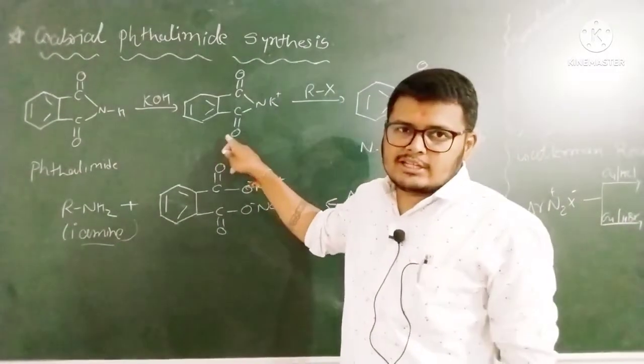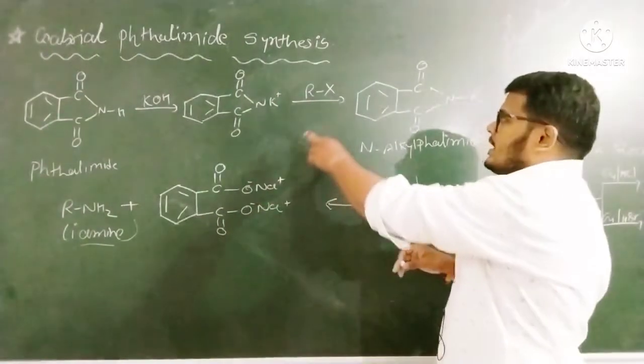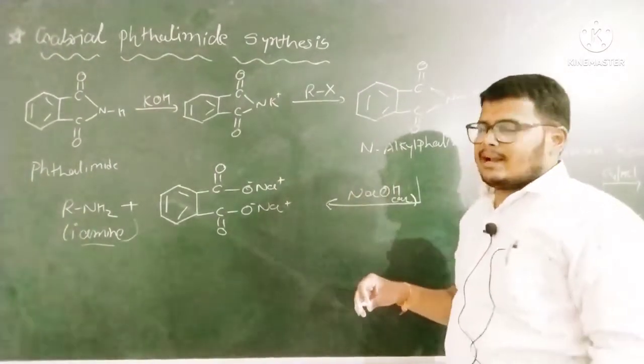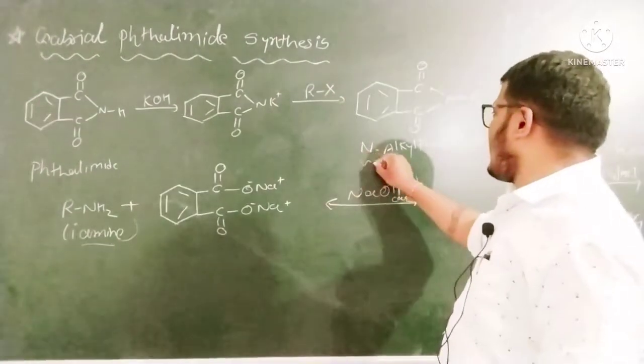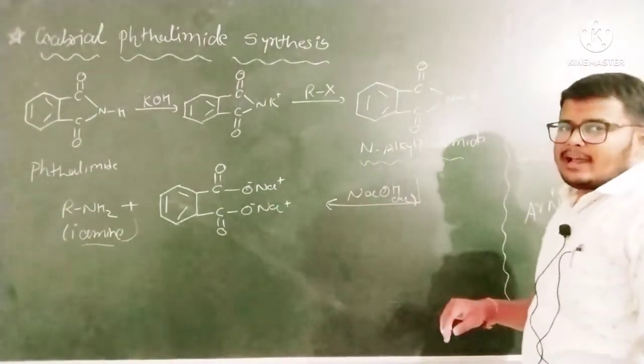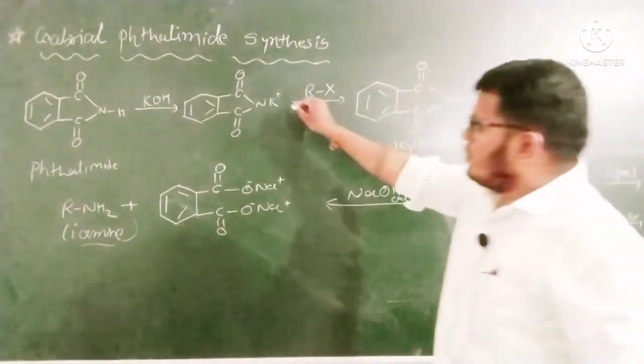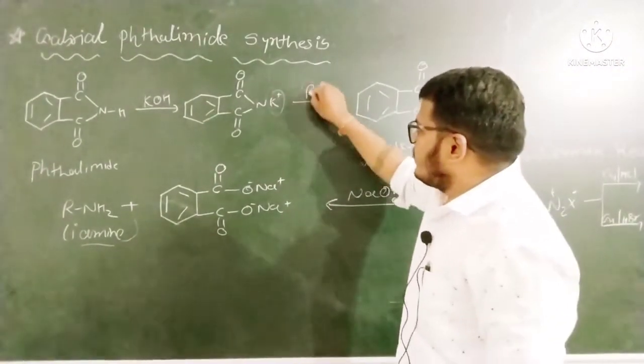It is converted into potassium salt and it is converted into N-alkyl phthalimide. In which you can see the potassium is replaced with R.